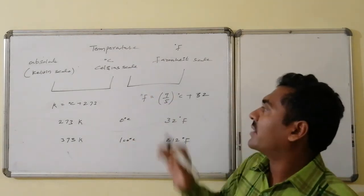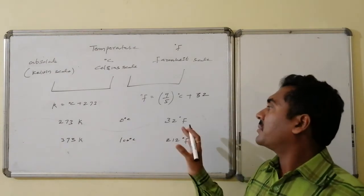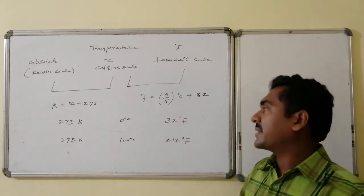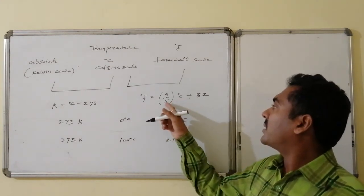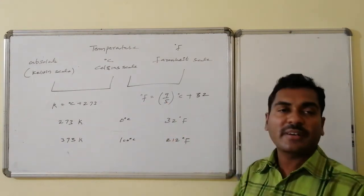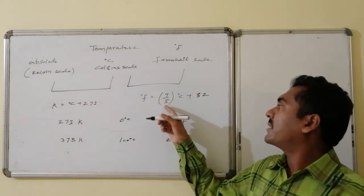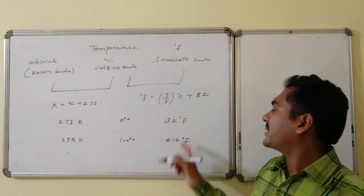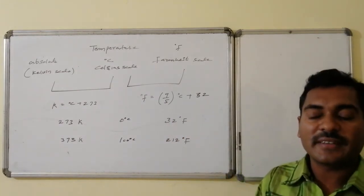The relation between Celsius and Fahrenheit: °F = (9/5 × °C) + 32. At 0°C: 0 + 32 = 32°F. At 100°C: (9/5 × 100) + 32 = 180 + 32 = 212°F.